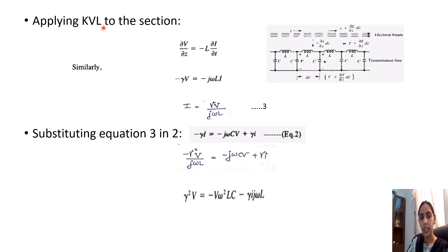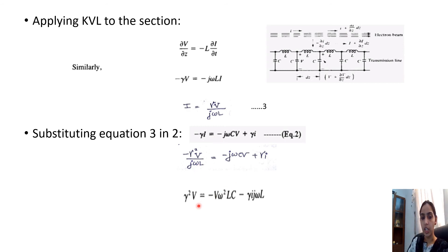Applying KVL to the dz section gives: ∂V/∂z = −L(∂I/∂t). Making the same substitutions (∂/∂z → −γ, ∂/∂t → jω), we get an expression for the current I in the transmission line. Substituting this third equation into the second equation yields a combined expression relating V and i.